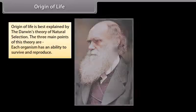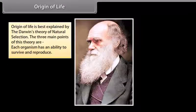Origin of Life is best explained by Darwin's theory of natural selection. The three main points of this theory are: each organism has an ability to survive and reproduce.